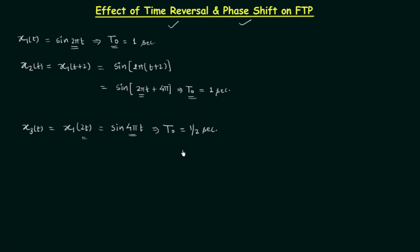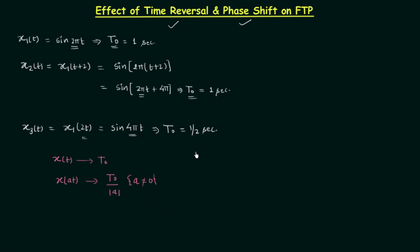From this result we can say that the fundamental time period is not independent of time scaling. We also obtained the general way to calculate the new fundamental time period: if there is a signal x(t) with fundamental time period t₀, then the new signal x(at) — obtained by scaling the time by a (where a ≠ 0) — has a fundamental time period of t₀/|a|. This was all we completed in the last lecture, and now we will start the new discussion on time reversal and phase shift.